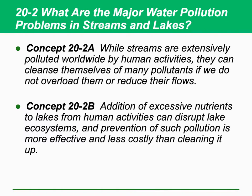What are the major water pollutant problems in streams and lakes? While streams are extensively polluted worldwide by human activities, they can clean themselves of many pollutants if we do not overload them or reduce their flows. This is the so-called natural clarification process done by bacteria in the water. But if we actually exceed the capacity of natural clarification, the water quality is affected.